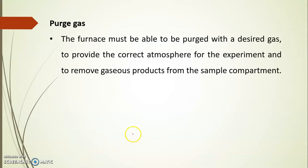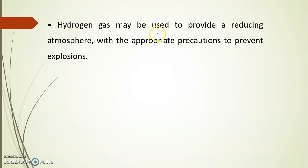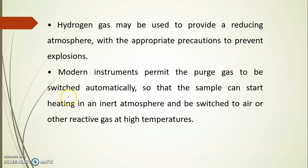Next part of the instrument is purge gas system. The furnace must be able to be purged with the desired gas to provide the correct atmosphere for the experiment and to remove gaseous products from the sample compartment. Argon or nitrogen is used when an inert atmosphere is desired. Air is often used for oxidation and combustion studies. Hydrogen gas may be used to provide a reducing atmosphere with the appropriate precautions to prevent explosions. Modern instruments permit the purge gas to be switched automatically so that the sample can start heating in an inert atmosphere and be switched to air or other reactive gas at high temperature.